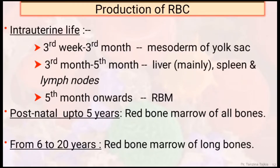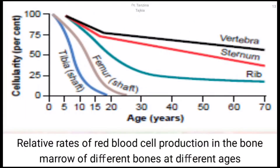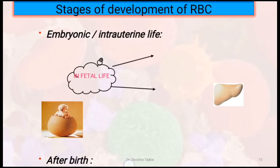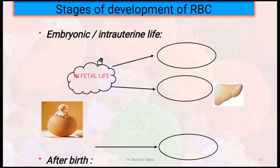Postnatal to 5th year: red bone marrow of all bones. From 6 years to 20 years: red bone marrow of long bones. This figure shows the relative rates of red blood cell production in the bone marrow of different bones at different ages. According to the site, the stages of development of RBCs are mesoblastic, hepatic, and myeloid. Mesoblastic is in the 1st trimester — blood cells formed in the mesodermal yolk sac. Hepatic is the 2nd and 3rd trimester — blood cells formed mostly in liver and some from spleen and lymph nodes. Then myeloid — red bone marrow begins to act as the bone-forming organ and becomes the sole region where RBCs are produced. This figure shows the stage of development of RBCs — embryonic (intraembryonic) and after birth.